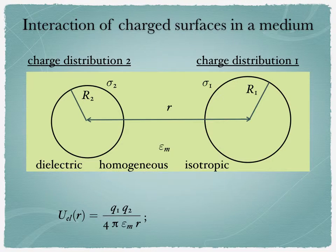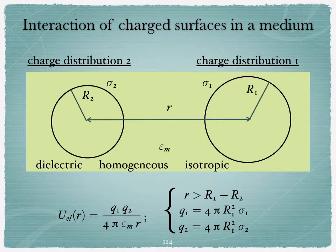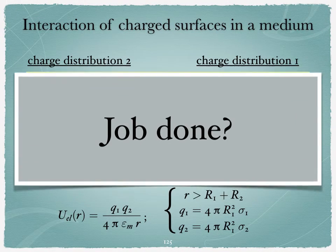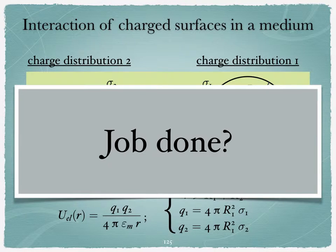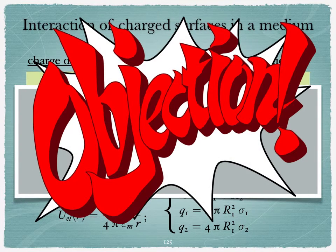Again, this is valid once r is bigger than r1 plus r2, with the expression for q1 and q2. So is that it? Have we finished deciphering how such colloids would interact? Well, actually no. There is one big thing that we have forgotten.